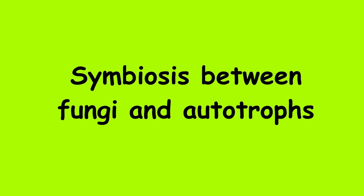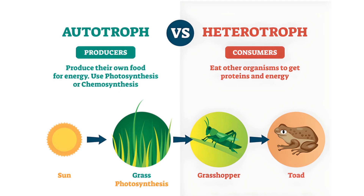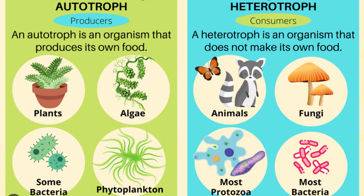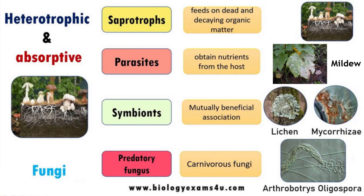Food chains at the most basic level consist of producers and consumers. Organisms such as plants, algae, or some bacteria produce their own food — they are autotrophic. Consumers such as fungi, animals, or most bacteria live by taking in and digesting organic substances produced by other organisms.